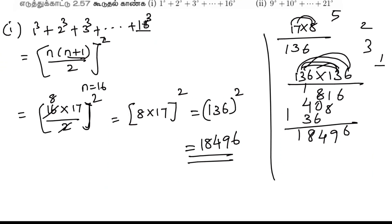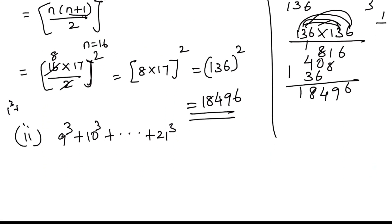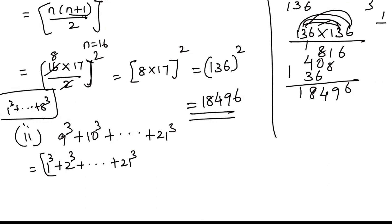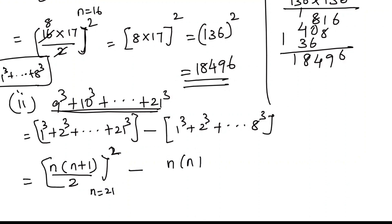Problem 2: find the sum 9 cube plus 10 cube, likewise up to 21 cube. The formula is the same, but we subtract: sum of cubes from 1 to 21 minus sum of cubes from 1 to 8. That is: n into n plus 1 by 2 whole square, where n equals 21, minus the same formula where n equals 8.